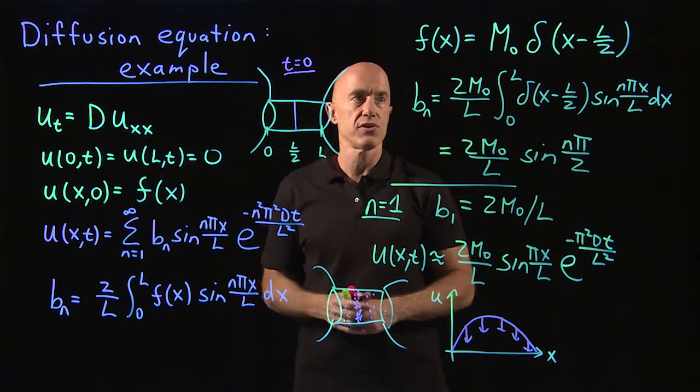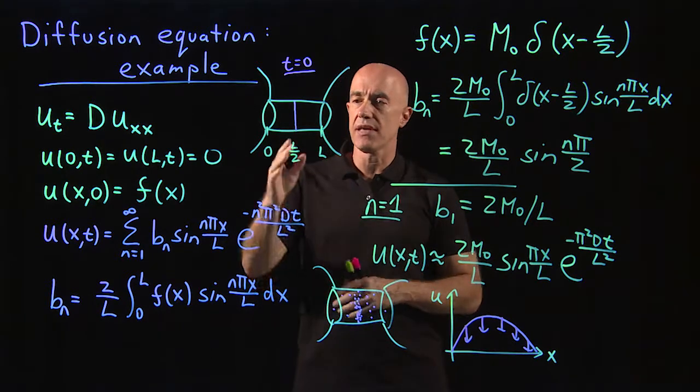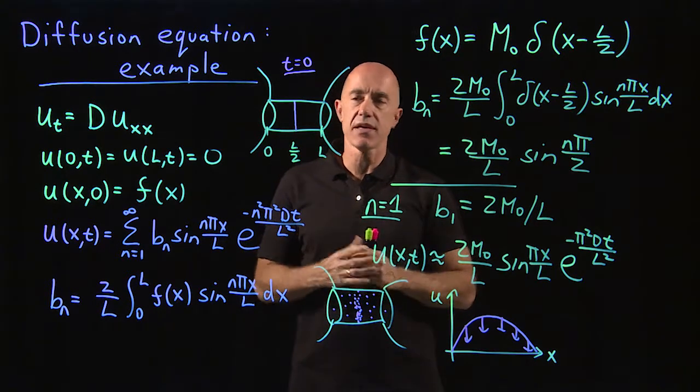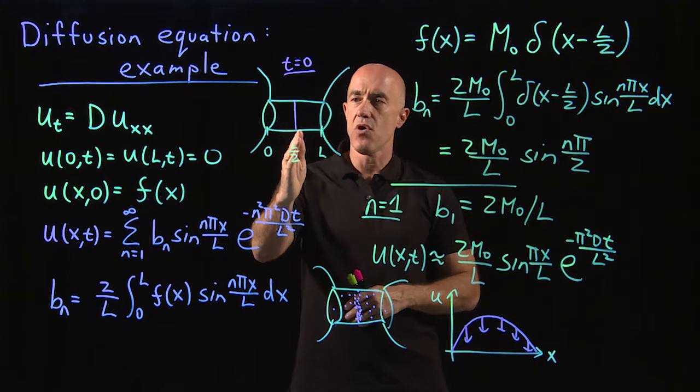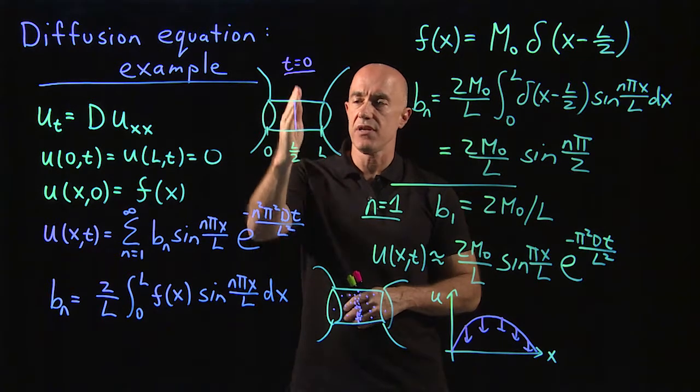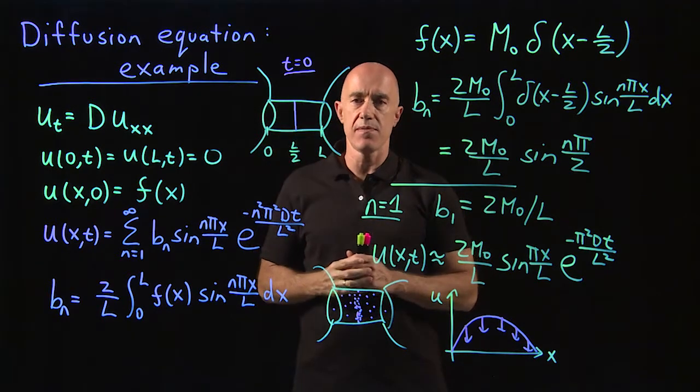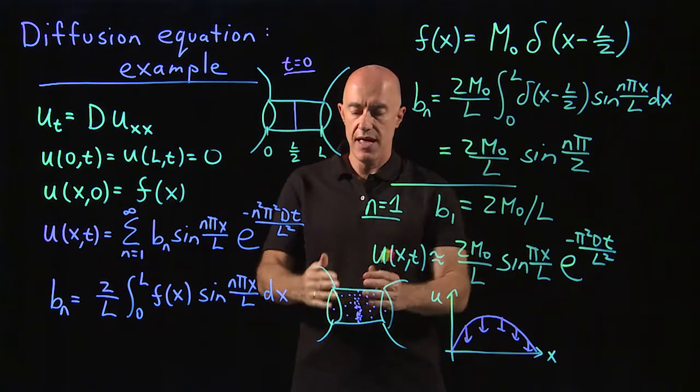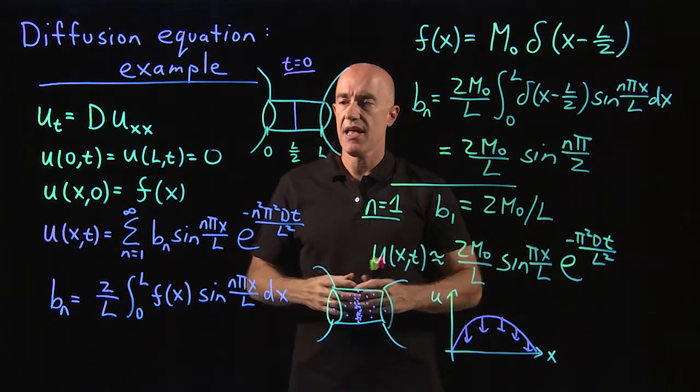This was our solution. In this video, I'm looking at the very specific initial condition when all the dye is centered in the middle of the pipe at t equals zero. And then it diffuses outward.